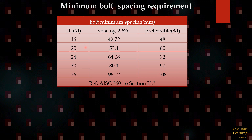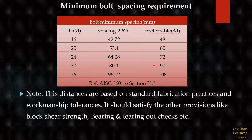You can see the bolt diameter here, the minimum spacing dimensions, and the preferable 3d dimensions. With respect to diameter, these values are calculated. We also have to keep in mind that these distances are mainly based on standard fabrication practices and work point tolerances. They should also satisfy other checks in connection design, like block shear strength, bearing strength, shear check, tear out check, etc.